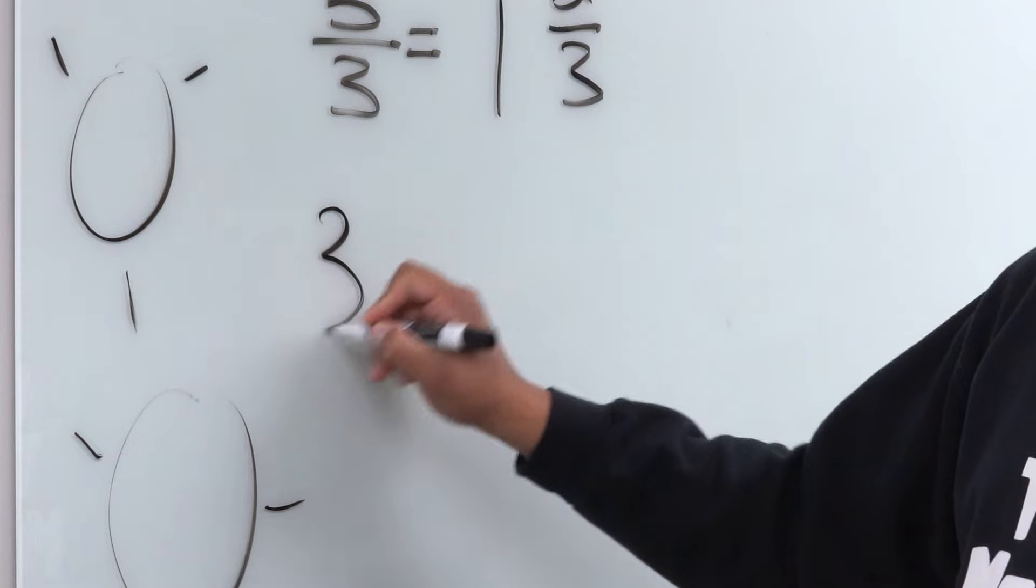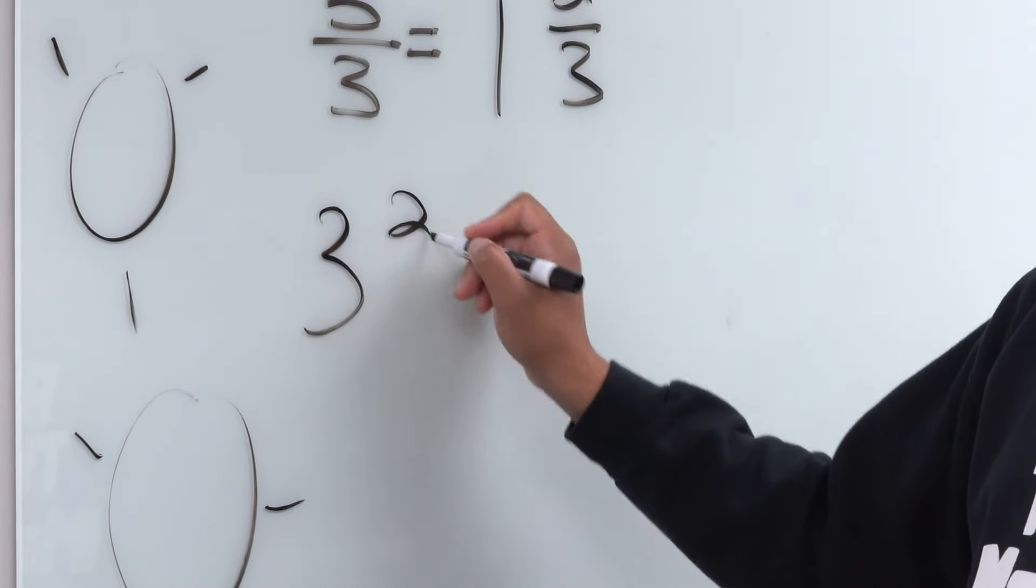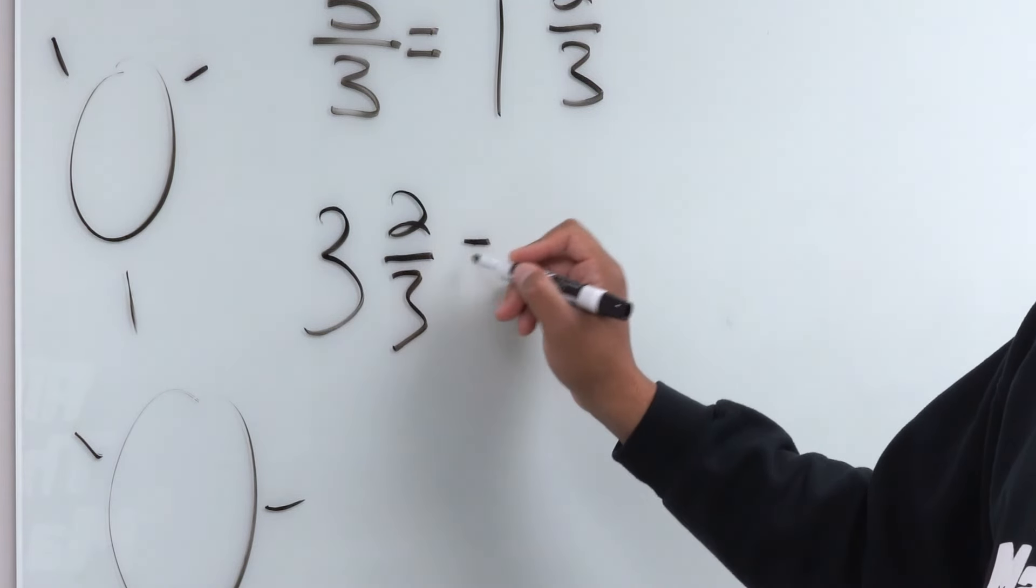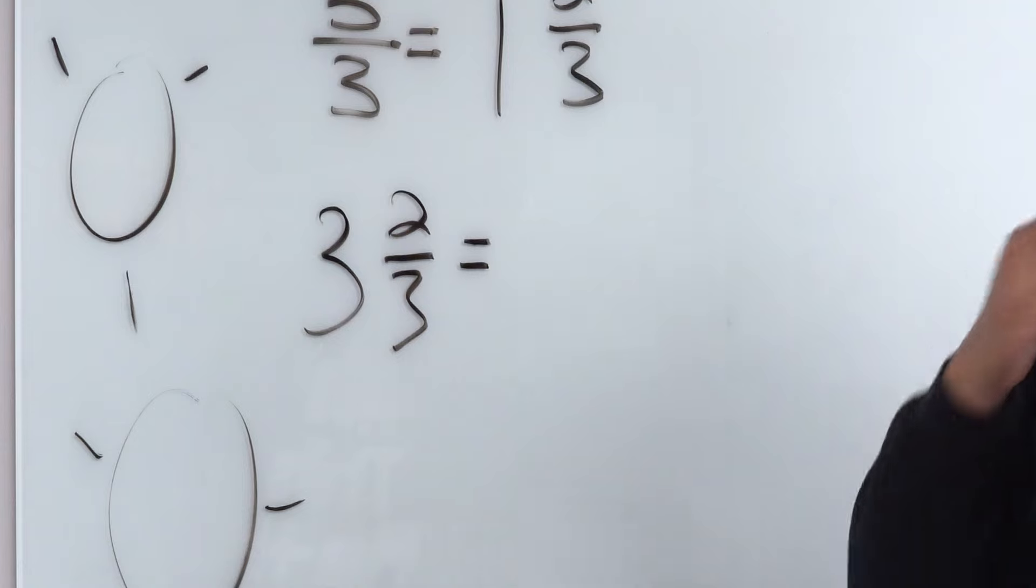Let's say 3 and 2/3, right? So we want to represent 3 and 2/3 as an improper fraction.